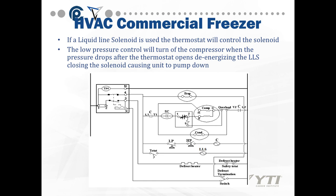If a liquid-line solenoid is used, the thermostat will control the solenoid, and the low-pressure control will turn off the compressor when the pressure drops after the thermostat opens. It de-energizes the LLS, closing the solenoid, causing the unit to pump down. A pump-down system removes all the refrigerant from the evaporator and puts it into a holding area in the condenser on the system, preventing liquid slugging back to the compressor, using the condenser and the receiver.